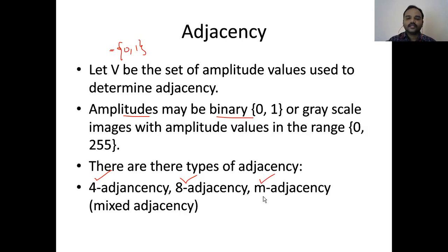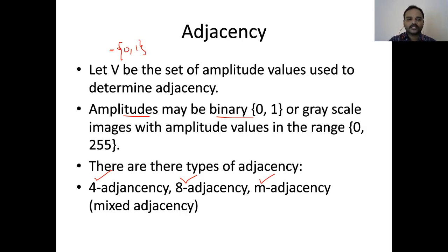There are three types of adjacency: the first one is four-adjacency, the second one is eight-adjacency, and the third one is mixed adjacency. Mixed adjacency will remove the ambiguities that arise in eight-adjacency. Now we will see about four-adjacency. Two pixels p and q with values from set V — I will consider the set as the binary set, that is {0, 1}.